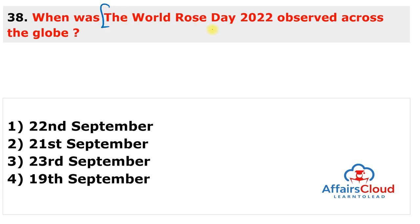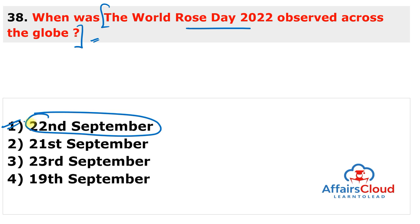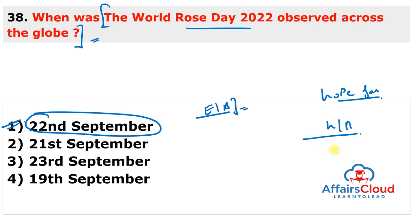World Rose Day 2022 was observed on 22nd September 2022 to encourage and acknowledge cancer survivors all over the world. It is a symbol of hope for cancer patients and aims to bring happiness and hope into the lives of such patients, reminding them that they can overcome cancer through determination and positivity. World Rose Day is also known as the Day for Welfare of Cancer Patients and is observed every year on 22nd September.